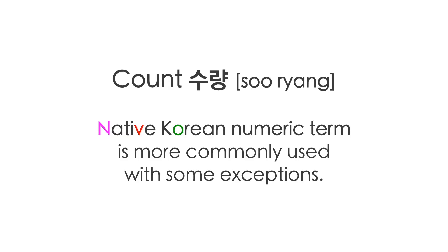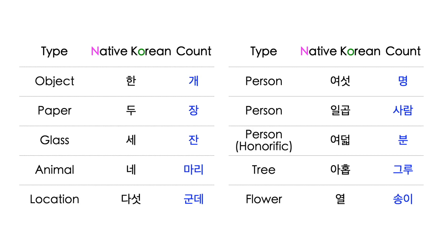For counts, native Korean numeric terms are more commonly used, but there are always some exceptions. There are different counters that need to match the type of objects being counted. For small objects or general objects without a specific counter, we use 개 or 가지. You can say 한 개 주세요 or 한 가지 주세요 when asking for one object.